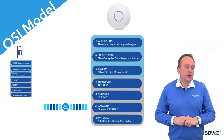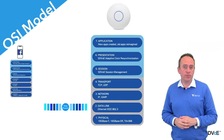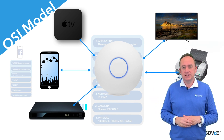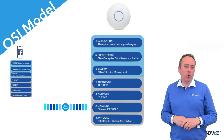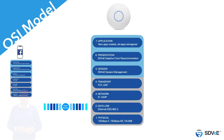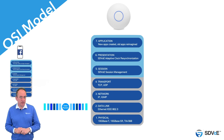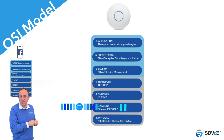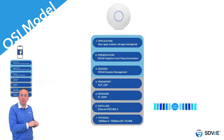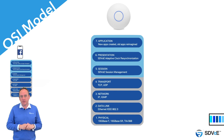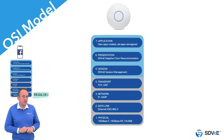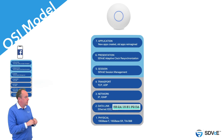Each host works differently and some hosts require more header information than others to do their job. For example, the job of a wireless access point is to shift the data packets to all the hosts connected to it, and to make this process as efficient as possible, it only requires information contained within layer 2. So when the frame packet hits the access point and is moved up to layer 2, the access point will unpack the layer 2 header, make a note of the information contained within it, create a new layer 2 header and send it back down to layer 1 to move to the next host. Layer 2 contains the MAC address of the host, so in this instance the wireless access point is making a note of the MAC address of the phone, then creates a new layer 2 header but this time places its own MAC address in there ready for the next host to note down.